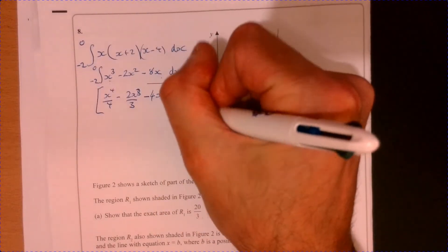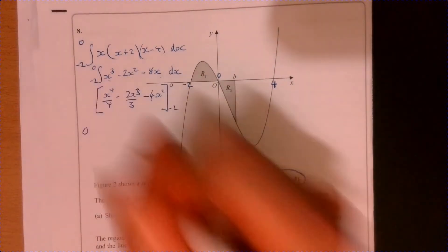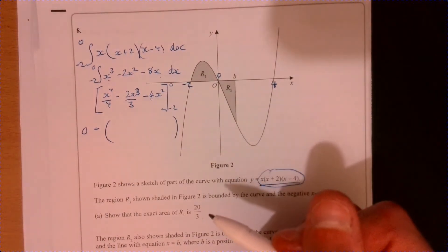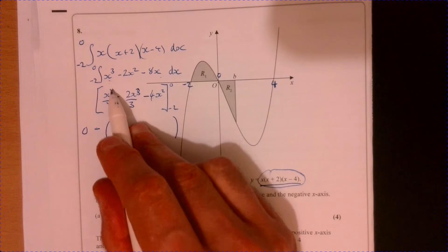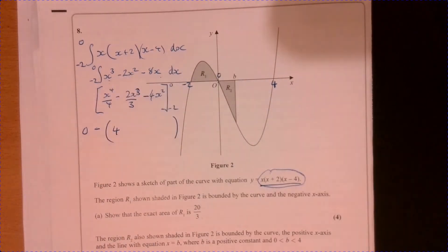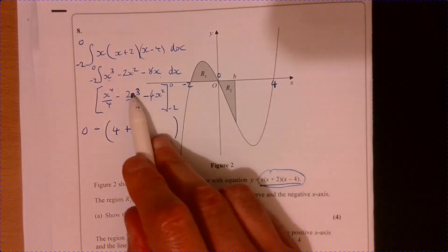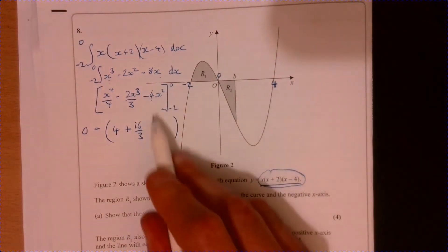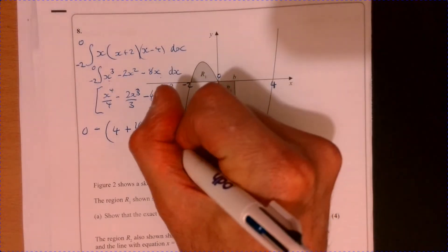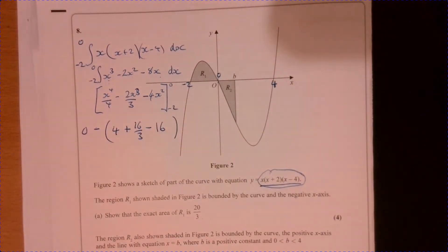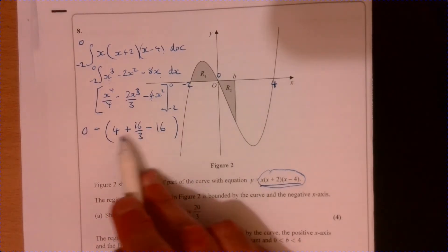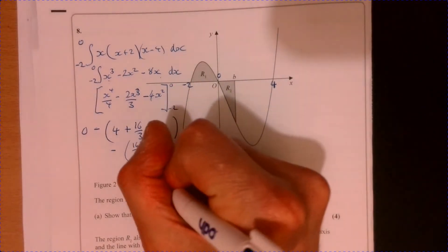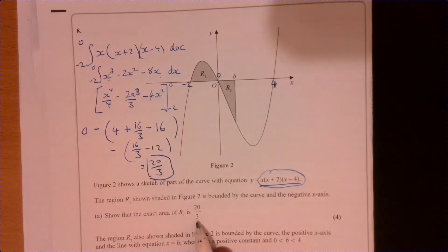Remember, we're going to pop in zero and minus two. If I pop in zero here, I'm going to get zero as my answer. Then we're going to take away, now I'll just pop in minus two into everything. So minus two to the power of four over four, that's going to give you four. Then minus two in here, it's minus eight times two, so it's actually going to be plus 16 over three. And then this one, that'd be a positive, so it's going to be a minus minus 16. If I work this bit out, that's going to give me four take away 16, that's 16 over three minus 12. And that lot equals 20 over three, which is, aha! That's what we are after.